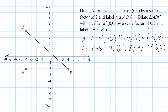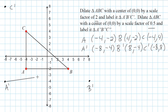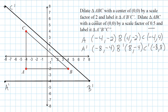C prime will be located at negative eight, positive eight. So let's go ahead and plot these points. A prime is at negative eight, negative four — we make our point and label it A prime. B prime is at positive eight, negative four — we plot and label that B prime. C prime is at negative eight, positive eight — we label that C prime. Then we connect all the points: A prime to B prime, B prime to C prime, and C prime back to A prime to form our dilated triangle.